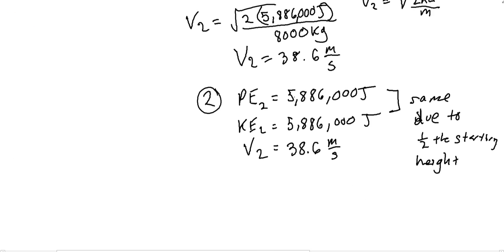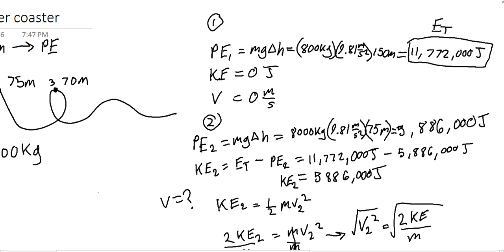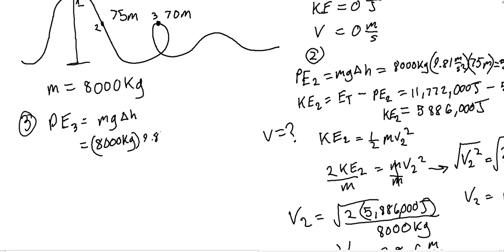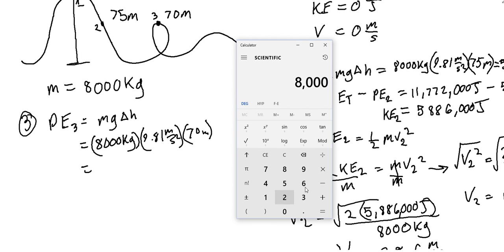The last piece of the puzzle is position 3, which is important because we need to calculate if this is going to kill somebody or not. The potential energy at 3 is mgΔH: 8,000 kilograms times 9.81 meters per second squared, and the change in height is 70 meters. Plugging that into the calculator: 8,000 times 9.81 times 70 gives us 5,493,600 joules.